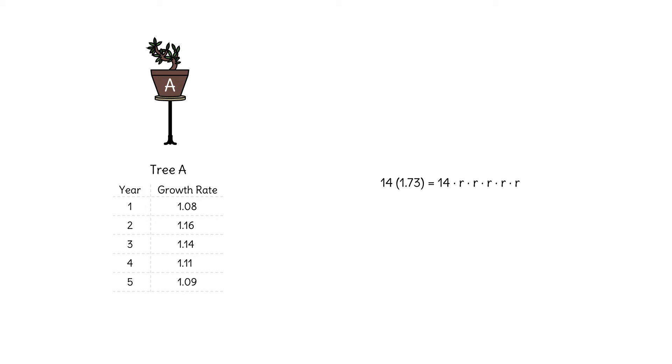So 14 times 1.73 equals 14 times r, the unknown steady growth rate, multiplied over five years. That's 14 times r to the fifth.